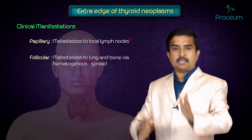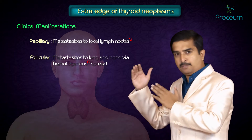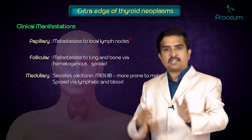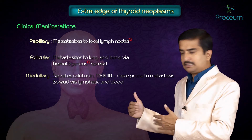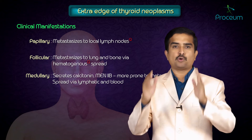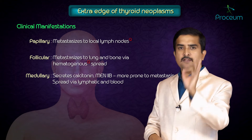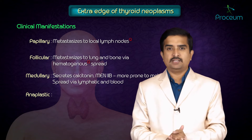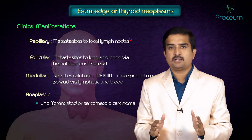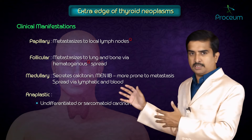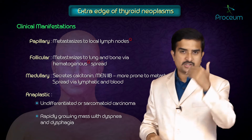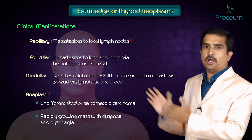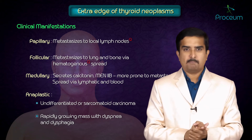Follicular carcinoma can metastasize to the lungs and bone via hematogenous spread. Medullary carcinoma secretes calcitonin from C cells, is associated with MEN syndromes, and is more prone to metastasis via both lymphatic and hematogenous routes. Anaplastic is undifferentiated and sarcomatoid, presenting as a rapidly growing mass with dyspnea and dysphagia.